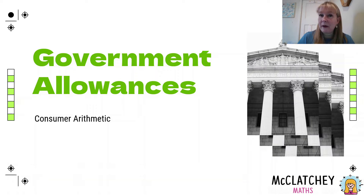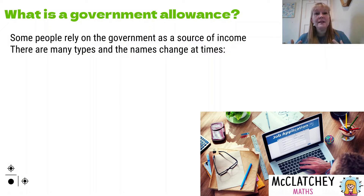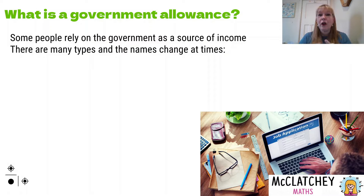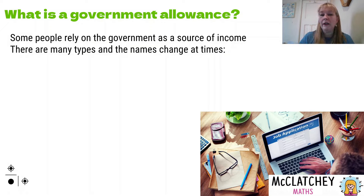A government allowance — you might be wondering what on earth is that? Well, in our society, the government is the body of people that are voted in at an election who are responsible for using the taxes that they charge us to pay for things like schools, roads, hospitals, airports, etc. Now, one of the things that they also do is help people that are less fortunate in society who are unable to provide an income for themselves that's beyond the poverty line.